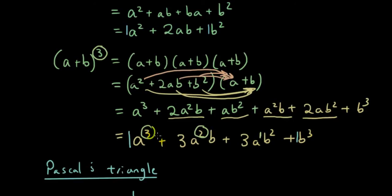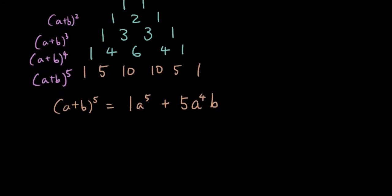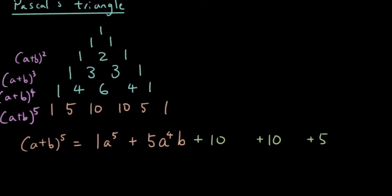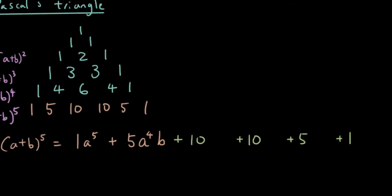So for a plus b to the power of 5, the powers of b go from b to the power of 0 in the first term, up to b to the power of 5 in the last term. Writing out the coefficients first: 1 plus 5 plus 10 plus 10 plus 5 plus 1, with a to the power of 5 down to a to the power of 0, and b to the power of 0 up to b to the power of 5.